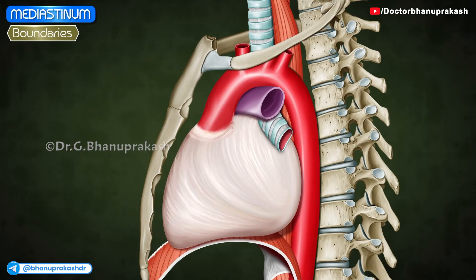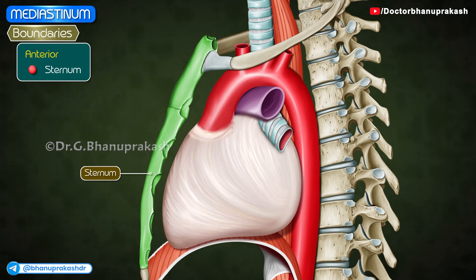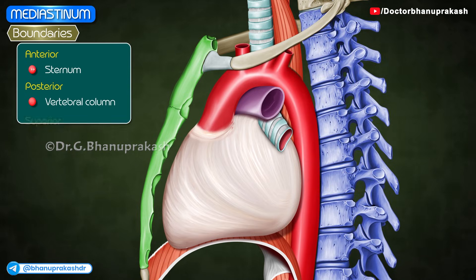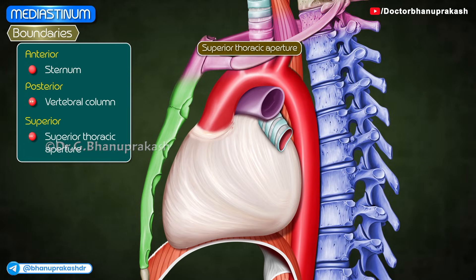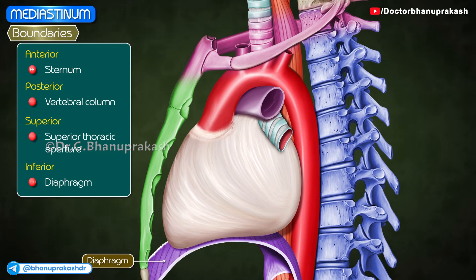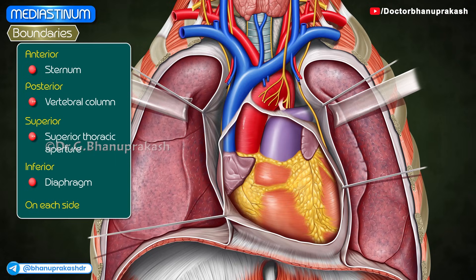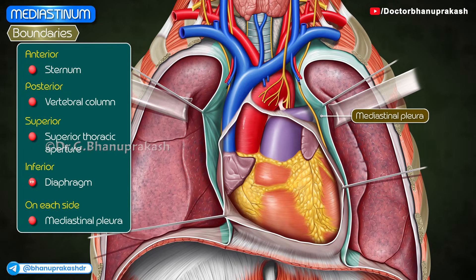Boundaries: Anteriorly it is bounded by the sternum, posteriorly by the thoracic part of the vertebral column, superiorly by the superior thoracic aperture, inferiorly by the diaphragm, and on each side by the mediastinal pleura.